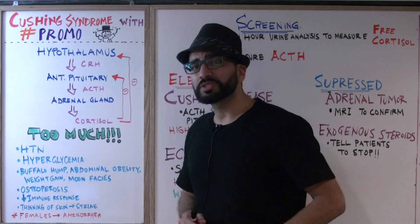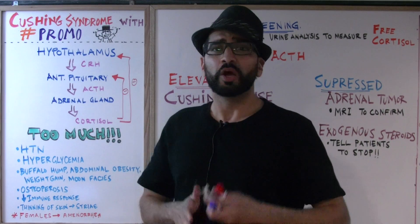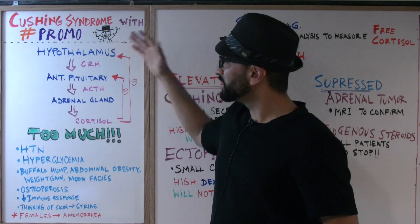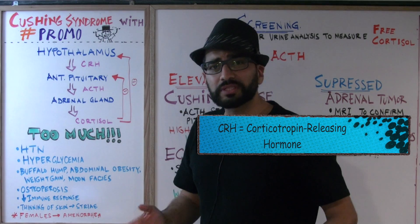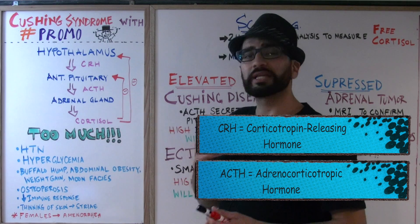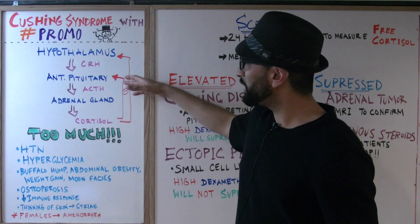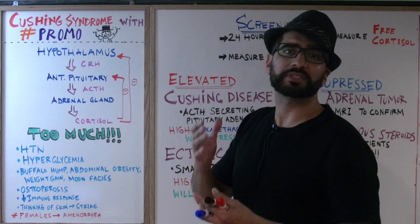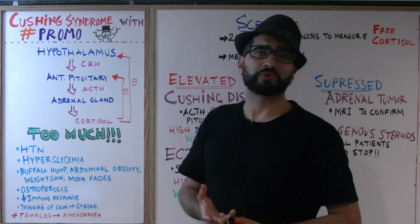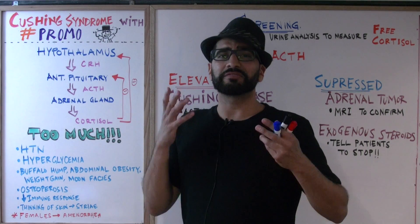Before we get into today's lecture, let's remind ourselves that the hypothalamus secretes CRH, which works on the anterior pituitary gland. The anterior pituitary releases ACTH, which works on the adrenal gland to release cortisol. Cortisol then through negative feedback will inhibit both the hypothalamus and ACTH, decreasing its own production. Now imagine what happens when there's way too much cortisol in the body.